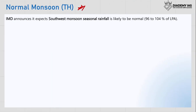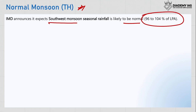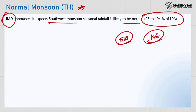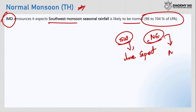Moving on to the topic of normal monsoon — the IMD recently announced it expects southwest monsoon seasonal rainfall to be normal, which is 96 to 104 percent of the long term period average. India has two kinds of monsoon: the southwest monsoon and the northeast monsoon. The southwest monsoon generally runs from June to September-October, and after that the northeast monsoon starts from November through December.